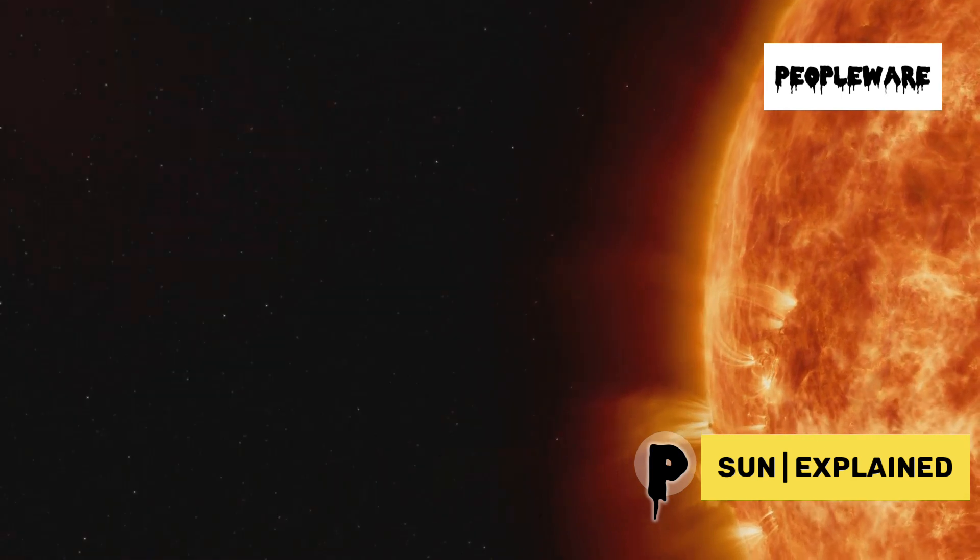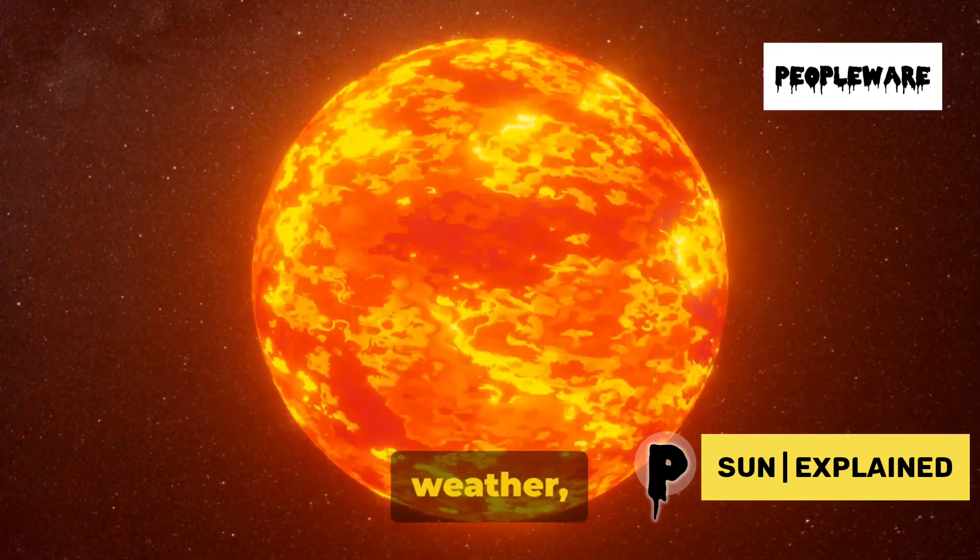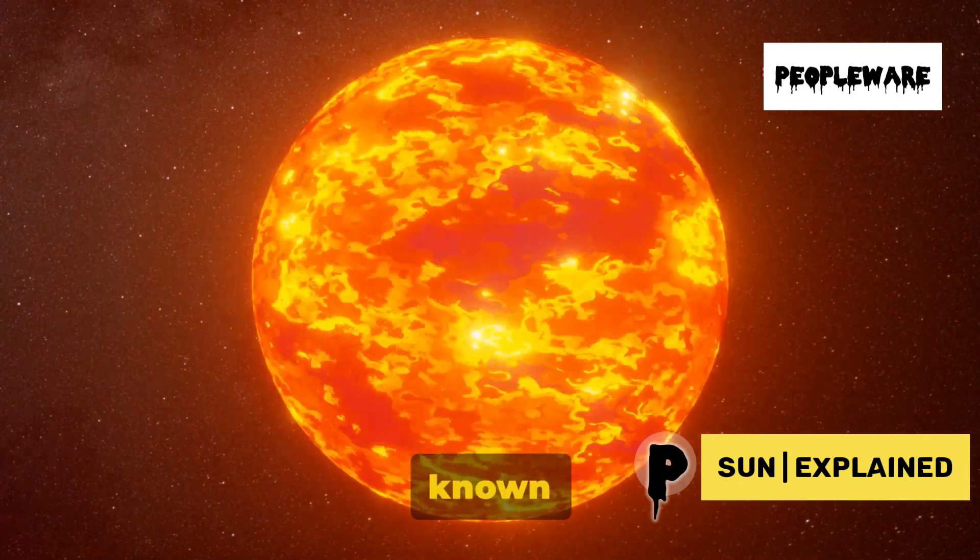But it's not always calm. The Sun has a magnetic field, much like Earth. And, just as Earth has weather, the Sun has its own form of weather, known as space weather.